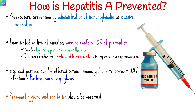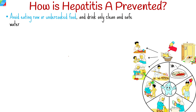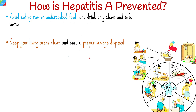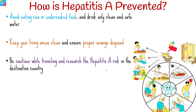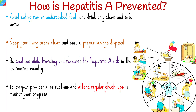Personal hygiene and sanitation should be observed. Wash hands thoroughly with soap and water, especially before eating or preparing food. Avoid eating raw or undercooked food and drink only clean, safe water. Keep living areas clean and ensure proper sewage disposal. Be cautious while traveling — research hepatitis A risk in the destination country and take necessary precautions. Follow your provider's instructions and attend regular checkups to monitor your progress.